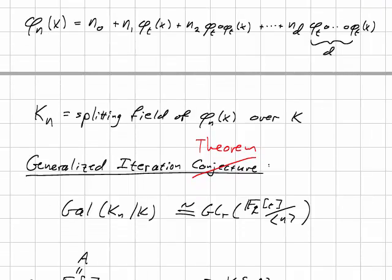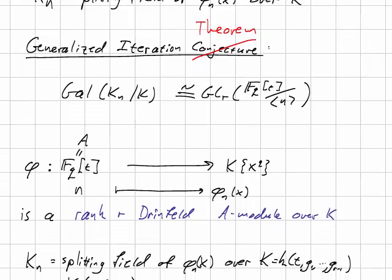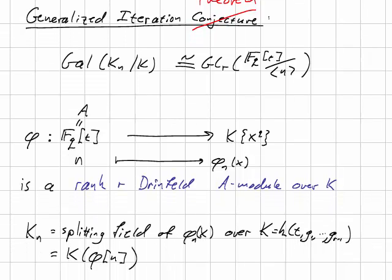The first insight is that this φ that we have created is, in fact, a rank r Drinfeld A-module over the field k. So what we now have is our splitting field K_n. That's nothing other than k adjoin the n-torsion module of this Drinfeld module φ.